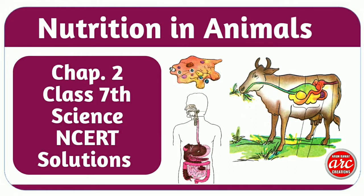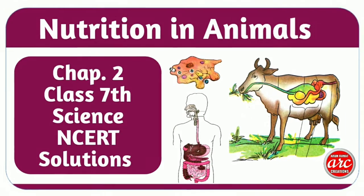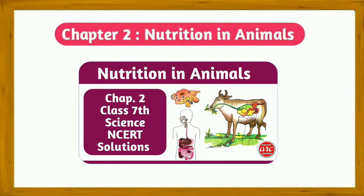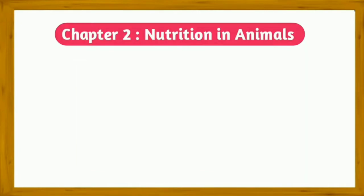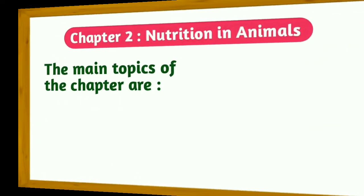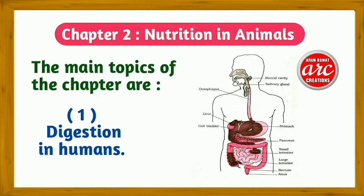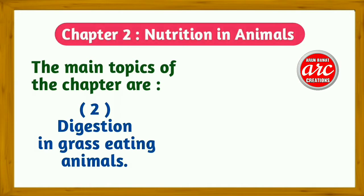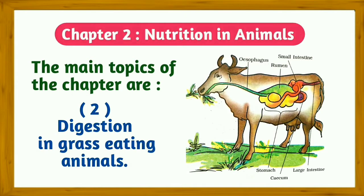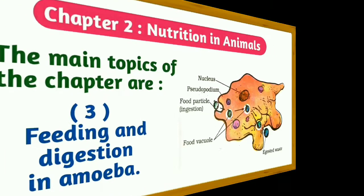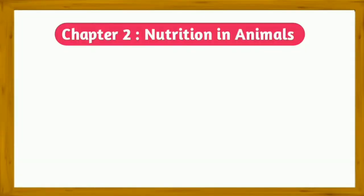NCERT solutions at your fingertips. Today we are going to do Chapter 2: Nutrition in Animals, Class 7 Science. The main topics of this chapter are digestion in humans, digestion in grass-eating animals, and feeding and digestion in amoeba.